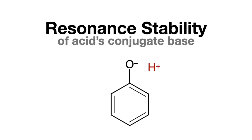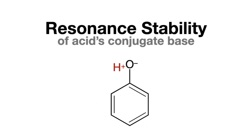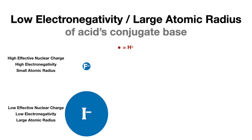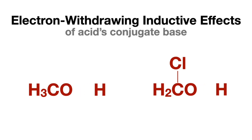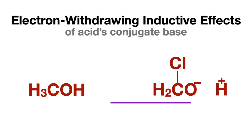A resonance-stabilized conjugate base is very unlikely to rebind the acid. Conjugate bases that have low electronegativity and therefore large atomic radius are less likely to rebind the acid, leaving it concentrated in solution. And conjugate bases with electron-withdrawing effects make it difficult for the positively charged acid to rebind to the partially positively charged conjugate base.